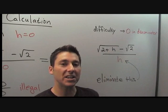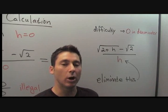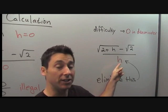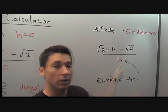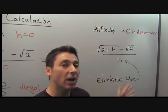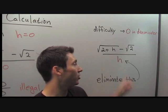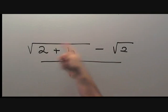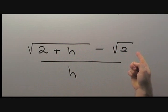The difficulty here is that we have a zero in the denominator. That comes from this h in the denominator as h goes to zero. Therefore we have to find some way to eliminate this h in the denominator. The difficulty in the original expression is the square root — we have a square root here and a square root here.